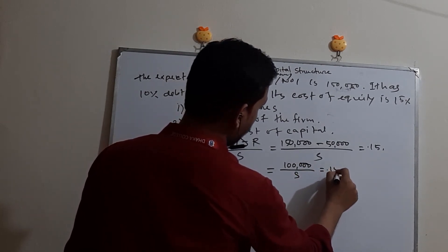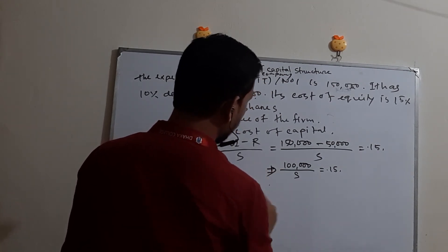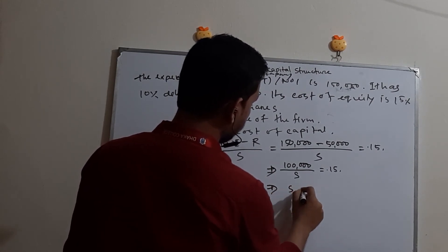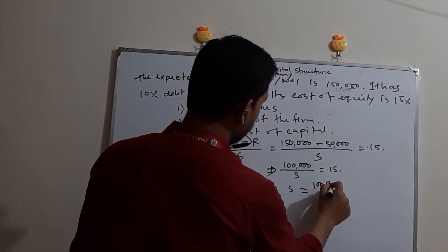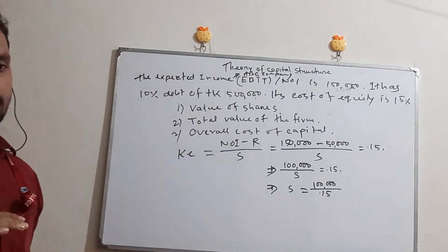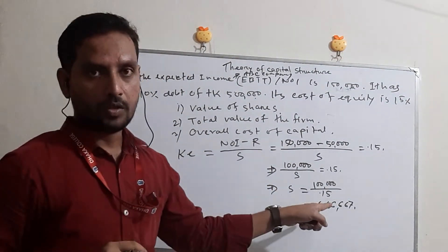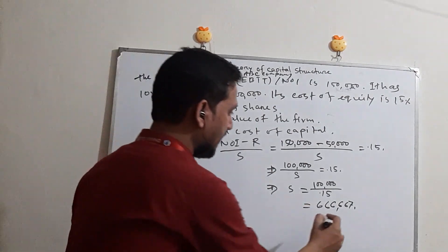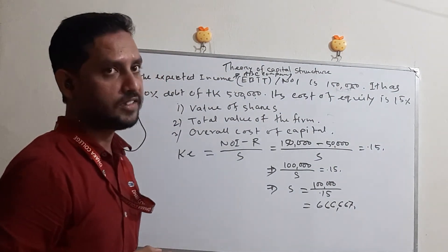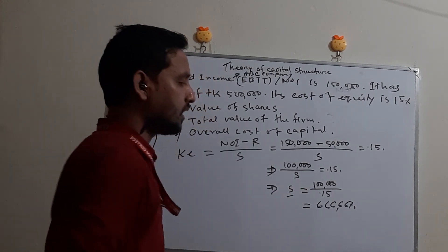Therefore S equals 1,00,000 divided by 0.15, which equals 6,66,667 Taka. This is the market value of shares.